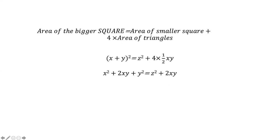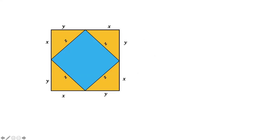We subtract 2xy from both sides of the equation, giving us Z² = x² + y². From the figure, Z is the hypotenuse, x is the base, and y is the height. So Z² = x² + y², which proves the Pythagorean theorem — the square of the hypotenuse equals the sum of the squares of the other two sides.